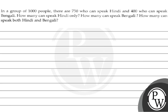Hello, let's read this question. The question says: In a group of 1000 people, there are 750 who can speak Hindi and 400 can speak Bengali. How many can speak Hindi only? How many can speak Bengali only? How many can speak both Hindi and Bengali?